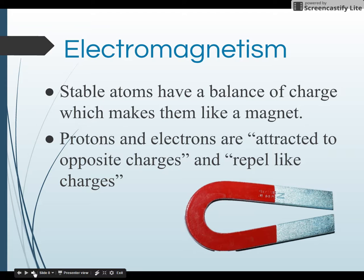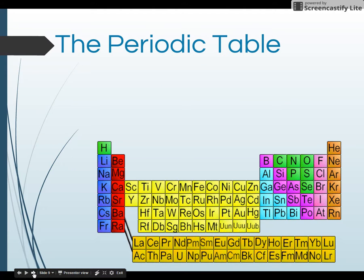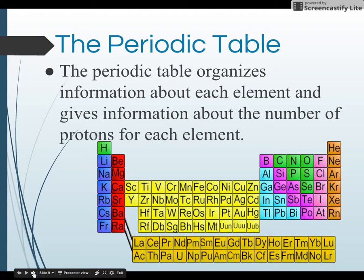We learn more about atoms in the periodic table. The periodic table organizes information about each element and gives information about the number of protons for each element. So all of these are different types of naturally occurring elements or atoms that we find here on Earth.